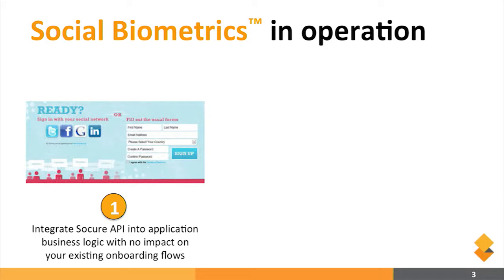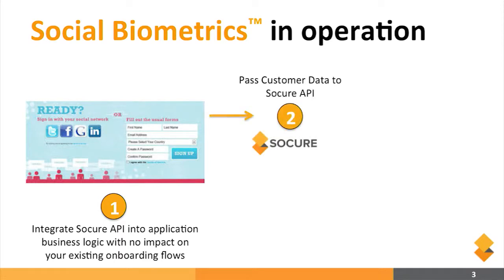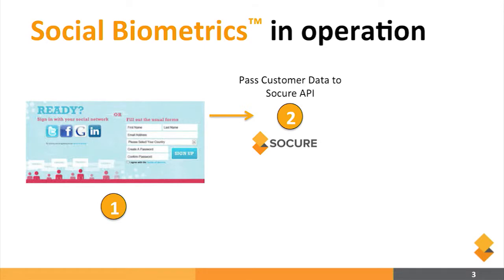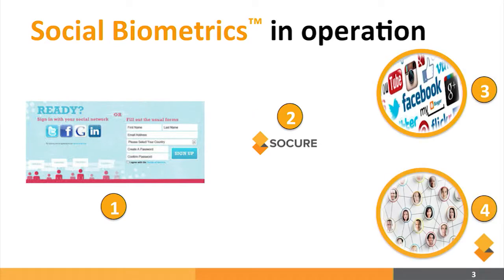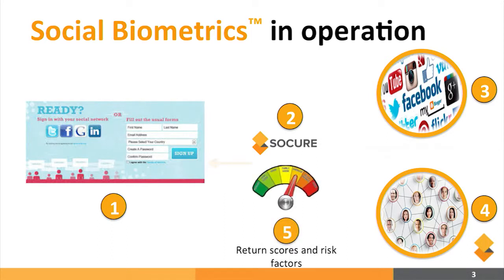Here's how the solution works. You're all used to seeing the onboarding form — typically how you onboard customers by asking people to type data into form fields. Increasingly you can also use social logins. We work in exactly the same way the market is currently served. While you might call Experian or Equifax, you would call SoCure and pass the data to us securely over web services. In real time, SoCure searches over 200 different websites and mobile applications, the entire internet, and our own graph databases, then discerns social proof for the profiles we deduplicate, and returns risk codes and risk factors to your application in real time.